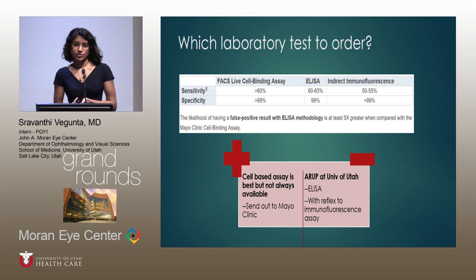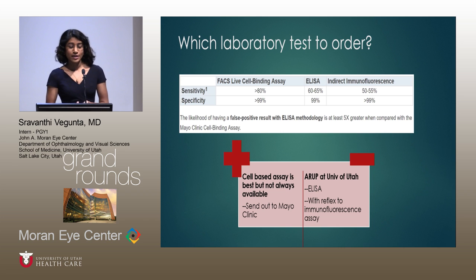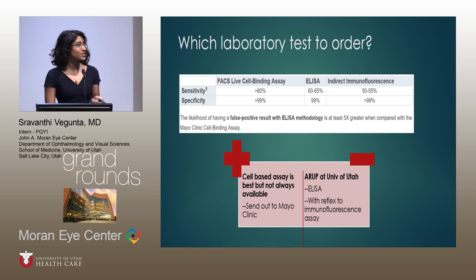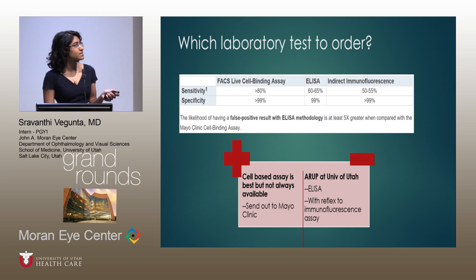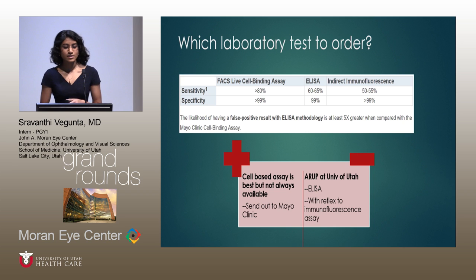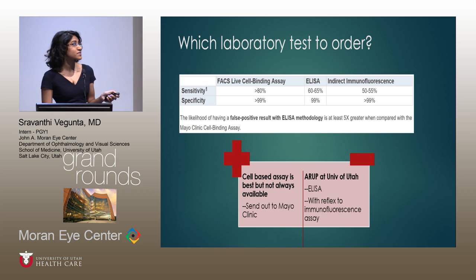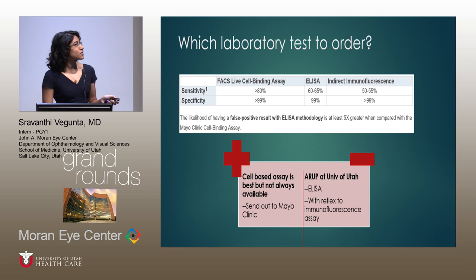Which tests should you use? There are over 40 assays available, but the international consensus criteria recommended the live cell-binding assay, as it has the highest sensitivity and specificity. At the University of Utah, we use ELISA with reflex to immunofluorescence assay — though it is less sensitive, with a risk of false positives at low antibody titers. Our practice is to test with ELISA first, and if positive, confirm by sending to the Mayo Clinic for a cell-based binding assay.